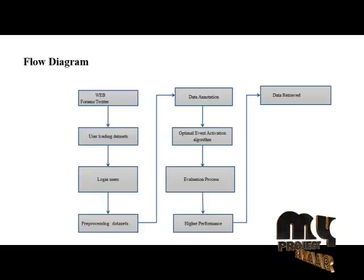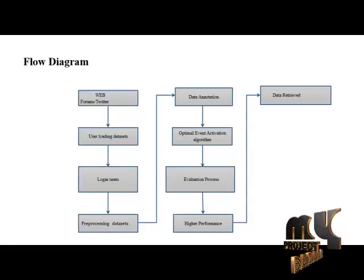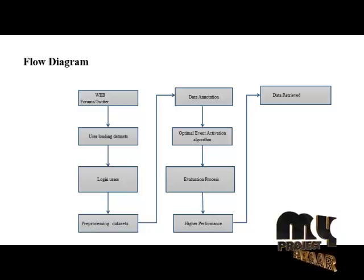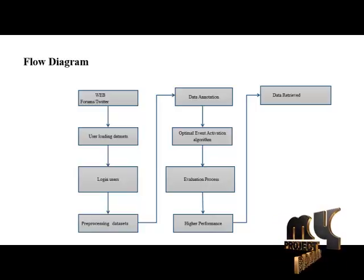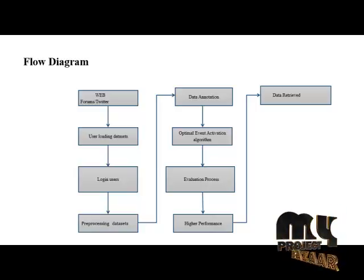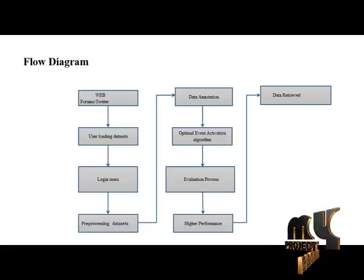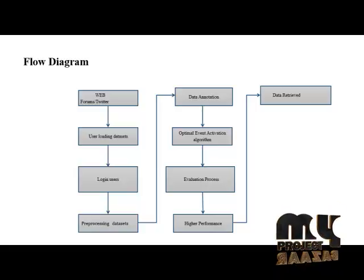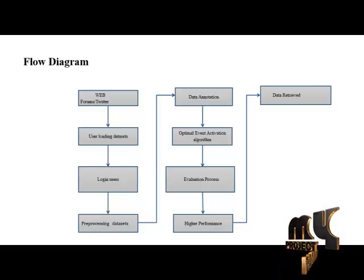In the flow chart of using crowdsourced data in location based social networks to explore influence maximization, we have to identify what processes need to take place.